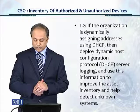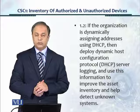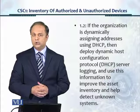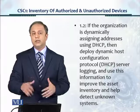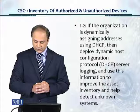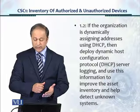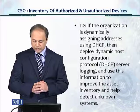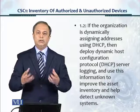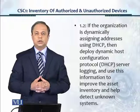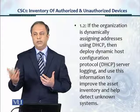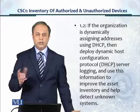Control 1.2, the next sub-control in CSC1, is inventory of authorized devices. If the organization is dynamically assigning addresses using DHCP — dynamic host configuration protocol — and most organizations do use dynamic address assignment rather than fixed addresses, which are very hard to maintain, then CIS advises using DHCP server logging to improve the asset inventory and help detect unknown systems. If you're using the logging feature, you can track everything being assigned an IP address and detect unknown systems.